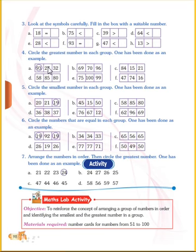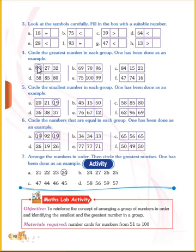Now, what is the next activity? Circle the greatest number in each group. One has been done as an example. Here you can see: 93, 27, and 32 — which is the biggest? 93 is the biggest number, so circle 93. Next, look here: 69, 70, 20, and 96 — which is the biggest number? 96. So circle 96.